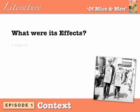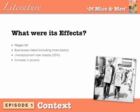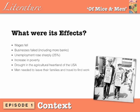Its effects were widespread. Wages fell, meaning less money in the pockets of workers. Businesses failed, including more banks, which put people out of work. Unemployment rose sharply — at its worst, 25% of the working population did not have a job. There was a big increase in poverty, putting huge pressure on average families, particularly men seen as the main source of income. A drought in the agricultural heartland of the USA made matters worse. Men found themselves with little choice but to leave their families and travel to find work, intending to send money home to support their wives and children. They often travelled alone.